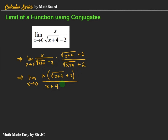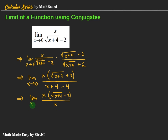So we have the limit of x(√(x + 4) + 2) over (x + 4 − 4), which simplifies to x(√(x + 4) + 2) / x as x approaches 0. We can now cancel x.